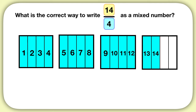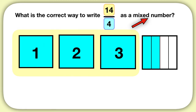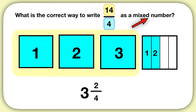Now to write this as a mixed number, I need to figure out how many whole squares I have. You can see I have 1 whole square, 2 whole squares, 3 whole squares. And then what fraction do I have left over? You can see I have 1, 2 fourths left over. So all together, my mixed number is 3 wholes and 2 fourths.